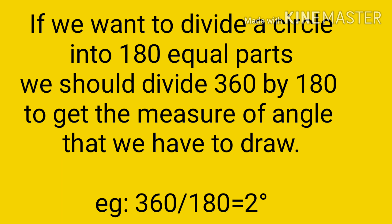For example, if we want to divide a circle into 180 equal parts, we should divide 360 — the total degrees — by 180, to get the measure of the angle that we have to draw. So, 360 divided by 180 is equal to 2 degrees each.